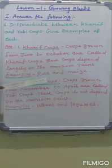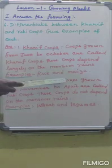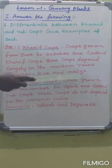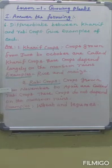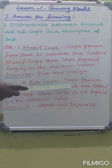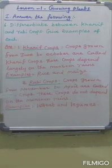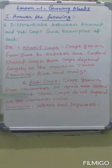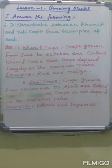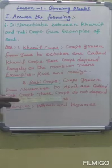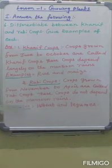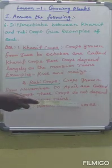Rabi crops: crops grown from November to April are called Rabi crops. These crops do not depend on the monsoon rains. Examples: wheat and legumes.